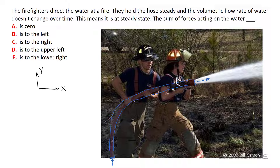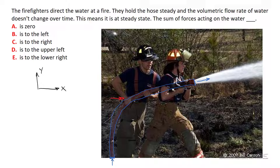However, leaving the control volume, we do now have x momentum. Where it leaves the control volume, the water is going to the right and slightly upward. Because we now have x momentum leaving the control volume, there must have been a component of force acting to the right on the water. And because there is less vertical momentum leaving the control volume, there must have been a component of force acting downward. So there is a horizontal component of force creating momentum in the x direction, and a component of vertical force acting in the negative y direction, which destroys the vertical component of momentum.